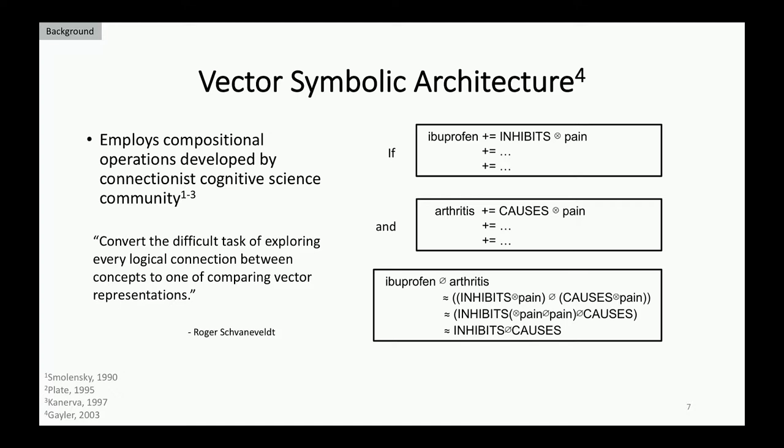The way we get around this is with what's known as a vector symbolic architecture. The general idea is to generate a vector representation for concepts as they're referred to in SEMREP. For ibuprofen, we encode how it relates to pain — in this case it inhibits it. We do this for other aspects in the space: arthritis causes pain. At the end of the day we decompose these entangled representations to find out exactly how they might relate. In the algebra of the space this is exactly what happens, as in this toy example. To use Roger Schvaneveldt's words, this converts the difficult task of exploring all those stepwise connections to one where we simply compare vector representations. This forms the core of the CORAL model.